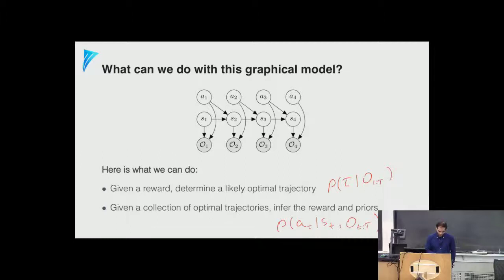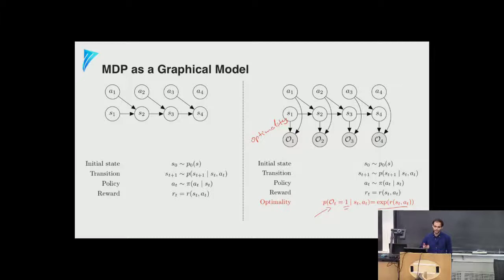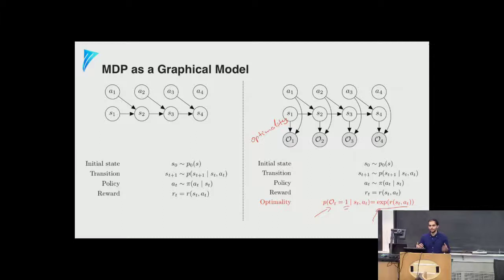Why does exp of the reward relate to optimality? We introduce an auxiliary optimality random variable: the higher the reward, the more likely the behavior is optimal. That's how we define optimality through the reward or utility function. At a given time point, we can tie together the probability of being optimal — having taken action a_t at state s_t — and the reward received, representing this through an exponential form.